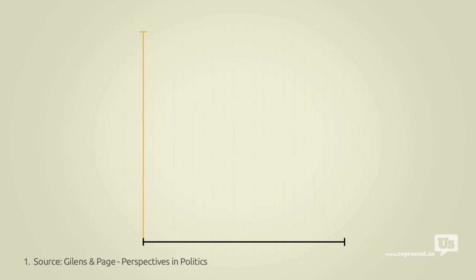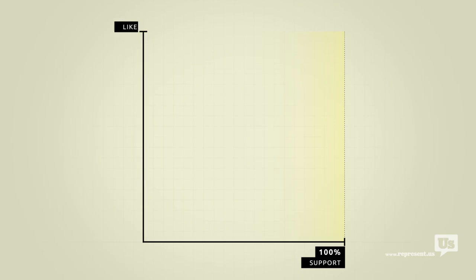This axis here represents public support for any given idea. On the left at 0% are ideas that not a single American wants. On the right at 100% are ideas that everyone supports. This axis represents the likelihood of Congress passing a law that reflects any of these ideas from a 0 to a 100% chance.